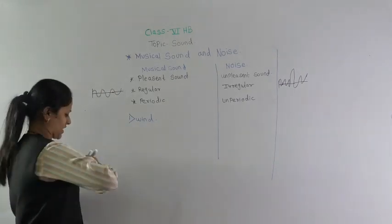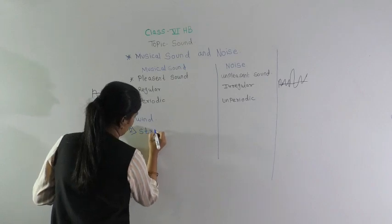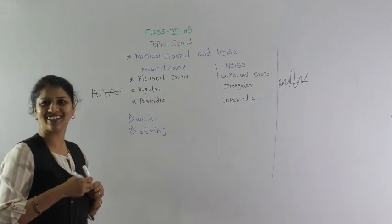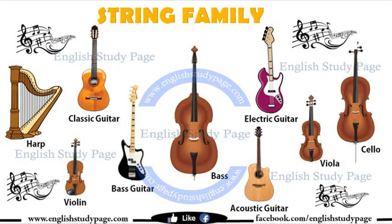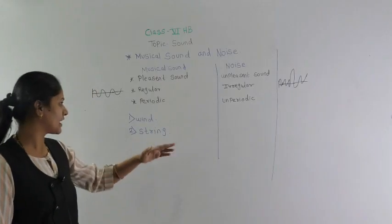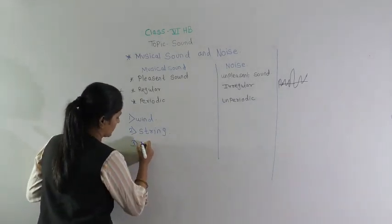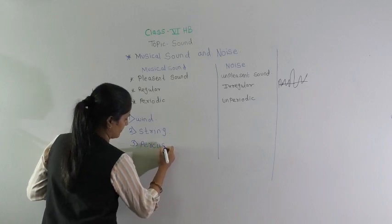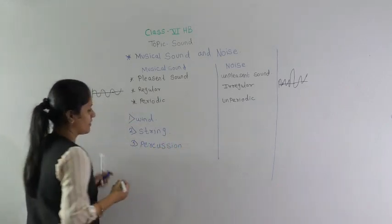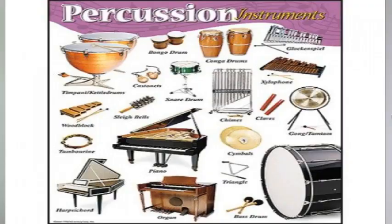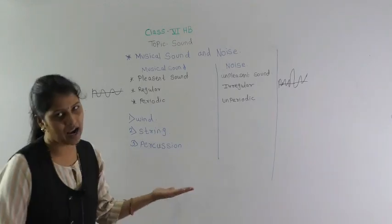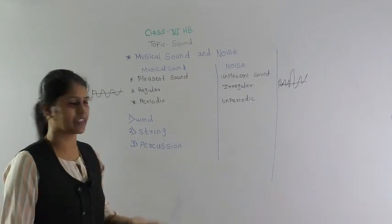The second is the string instrument, where sound is produced by plucking the string. For example, sitar and veena. The third is the percussion instrument, such as the tabla, which produces sound by vibration caused by striking with your hand or a hammer.